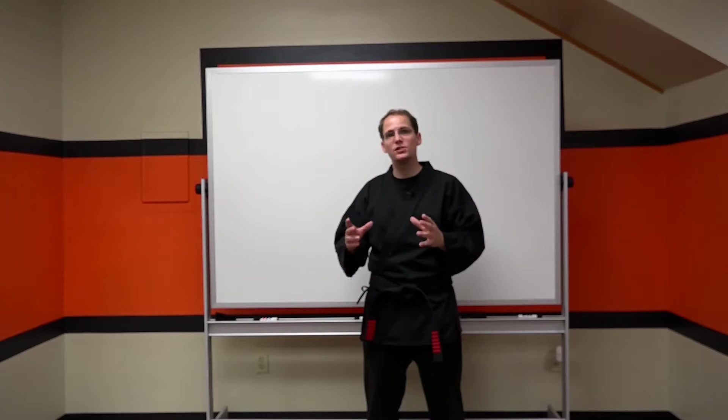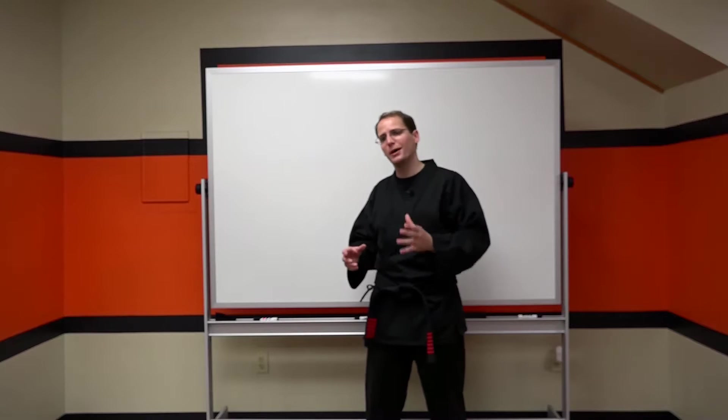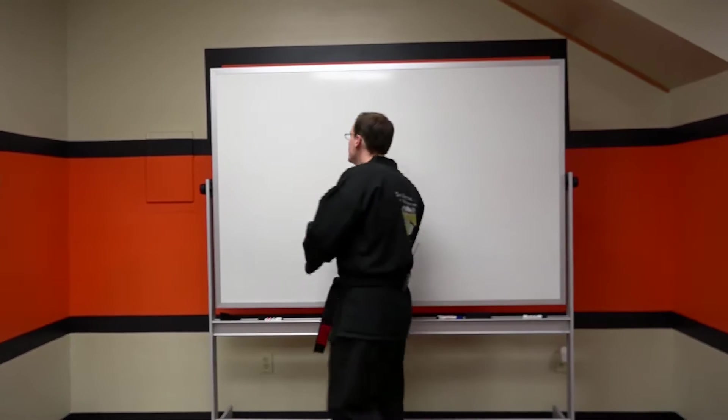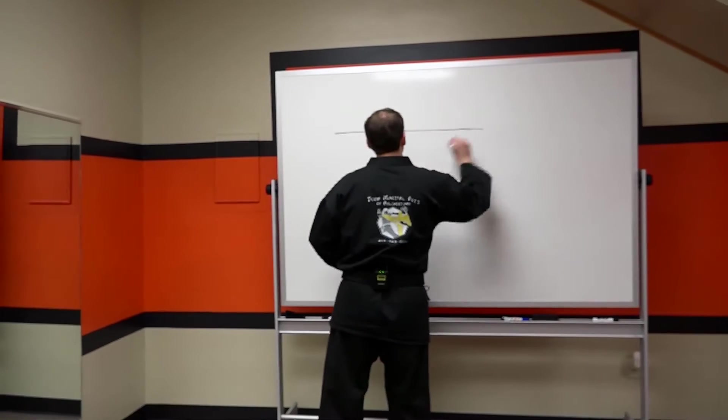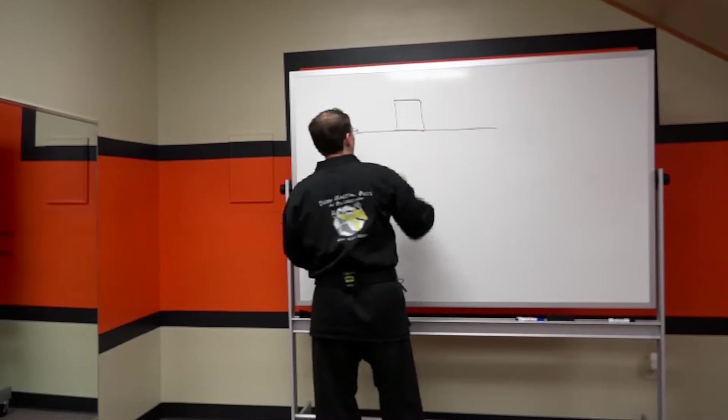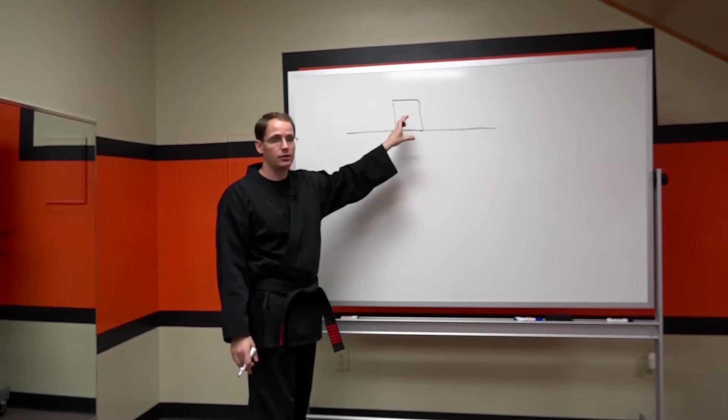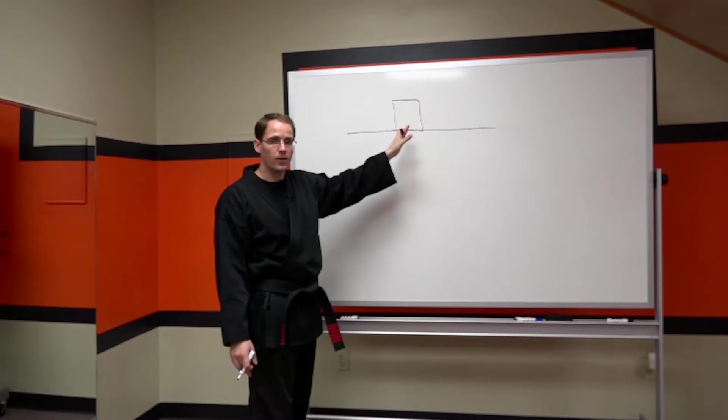Now to get started I want to look at a simple illustration that will help highlight a couple of the important principles that are at play. So I want you to imagine that we have a box that's sitting on the ground and currently there are no forces being applied to this box in the horizontal direction. So all the forces are in the vertical direction.